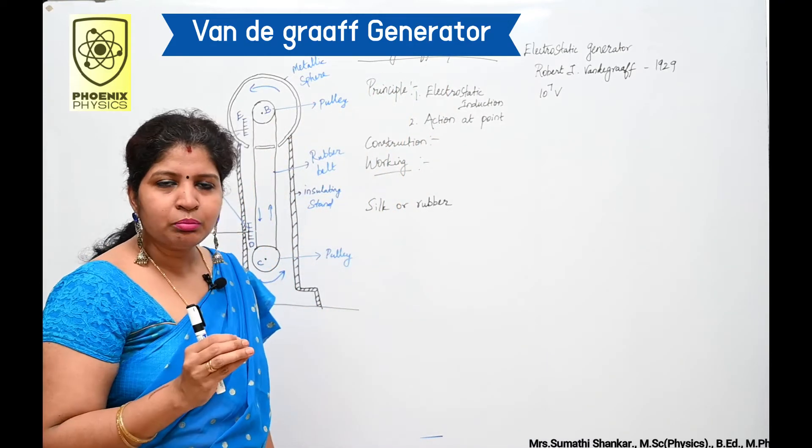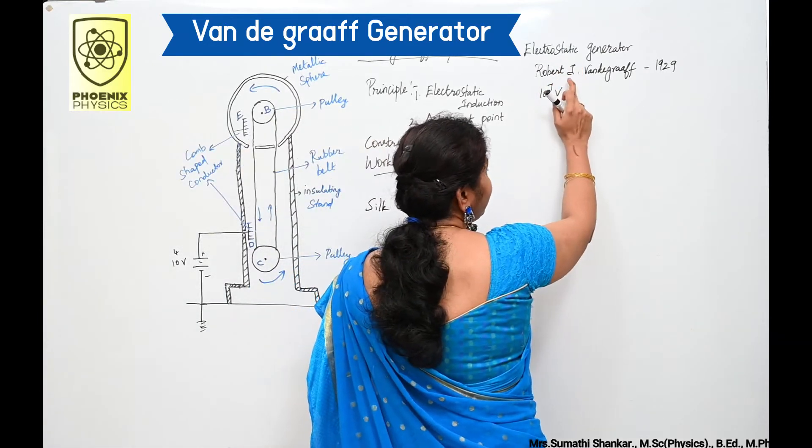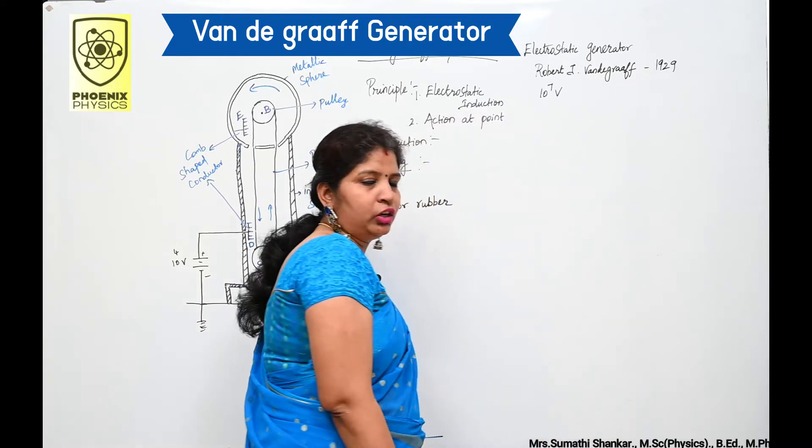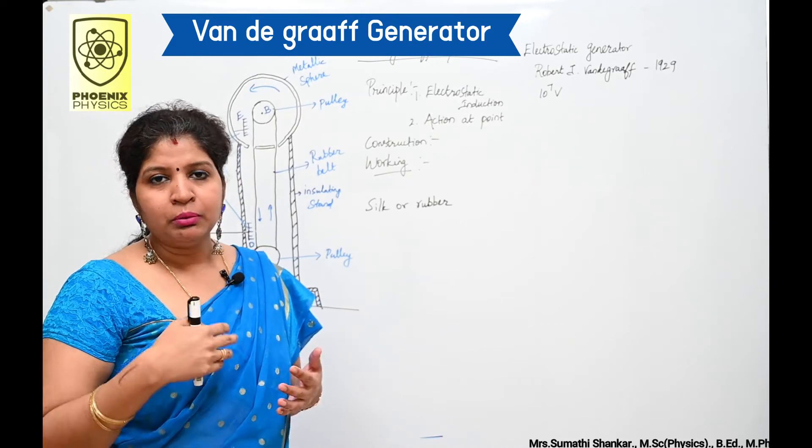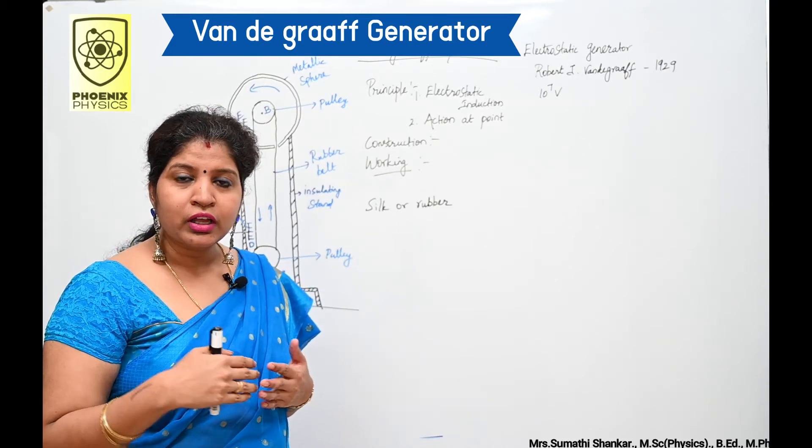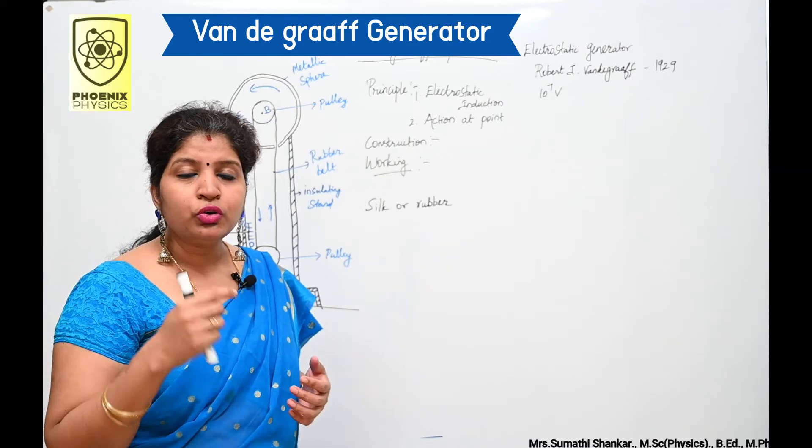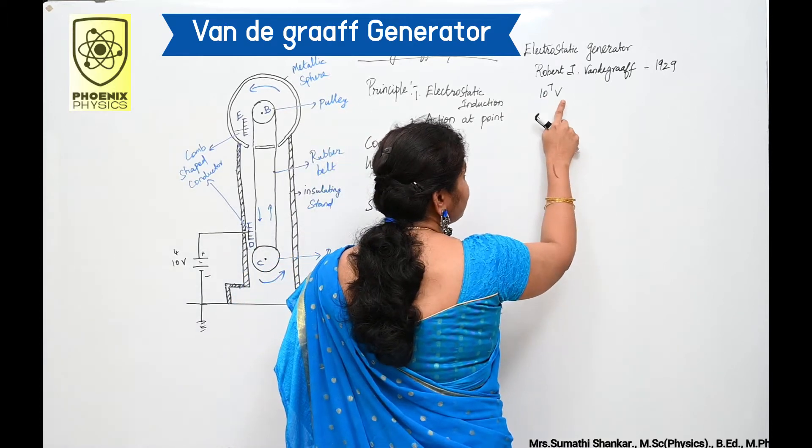It is an electrostatic generator designed by Robert J. Van de Graaff in the year 1929. Why do we use Van de Graaff Generator? Because it produces a large amount of potential difference up to several million volts, that is 10 to the power of 7 volts.